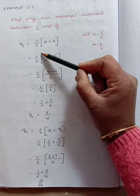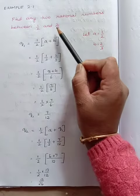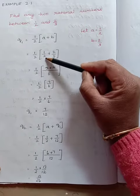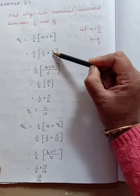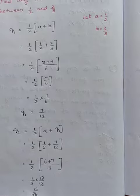So half into, in the place of A let us take it as 1/2 and B as 2/3. So half into, in the place of A I have written 1/2 plus 2/3. Now here the denominator values are different.